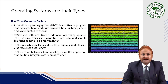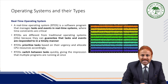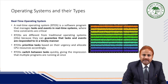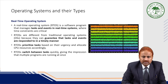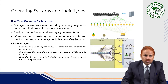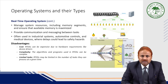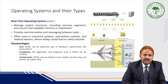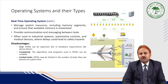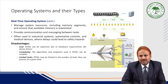Another type is the real-time operating system (RTOS). An RTOS is a software program that manages tasks and events in real-time systems where time constraints are very critical. RTOS are different from traditional operating systems because they can guarantee that tasks and events are responded to in a timely manner. RTOS prioritize tasks based on their urgency and allocate CPU resources accordingly. They switch between tasks quickly, giving the impression that multiple programs are running at once, and manage memory to ensure it is optimally used.